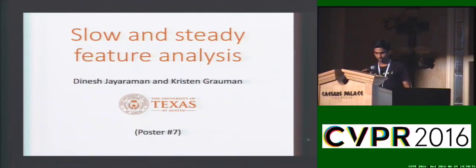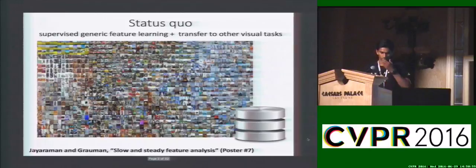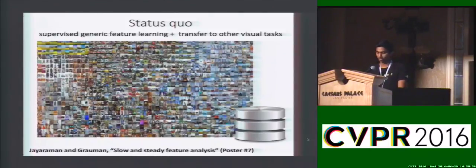Hi, I'm Dinesh Jairaman, and this paper is called Slow and Steady Feature Analysis. The standard for visual recognition tasks in the last few years has been to pre-train deep neural networks on large labeled datasets like ImageNet.